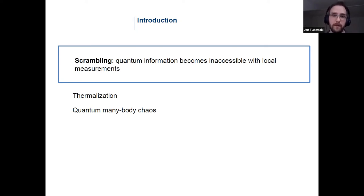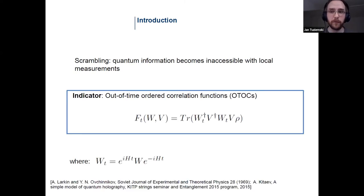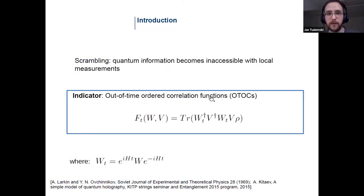Is there a way to quantify scrambling — to say how fast it happens, or to compare different systems and say which one scrambles quantum information more or less? One of the tools used to quantify scrambling is the so-called out-of-time-ordered correlation functions, which I will refer to as OTOCs.